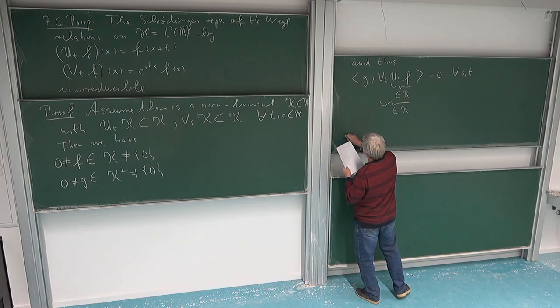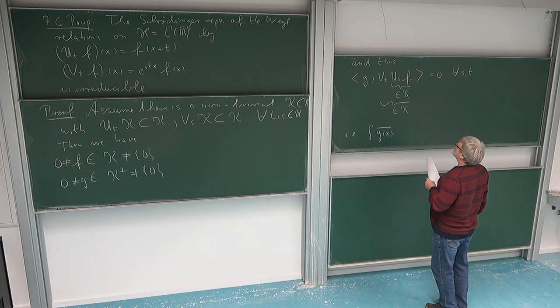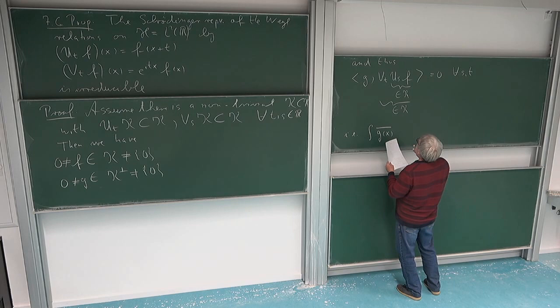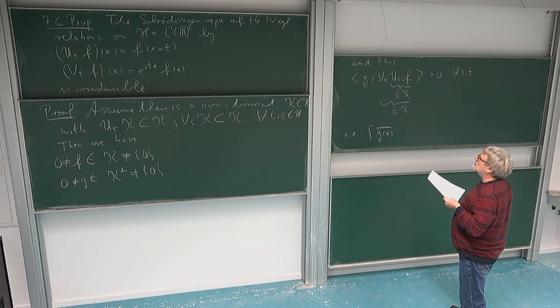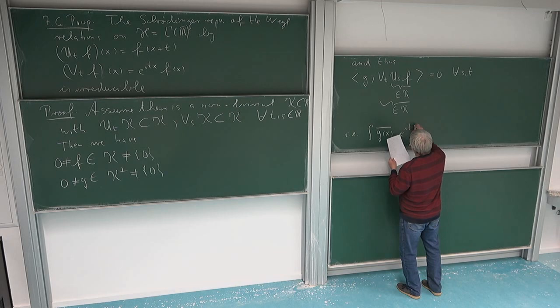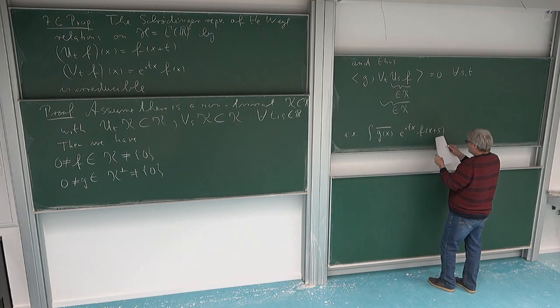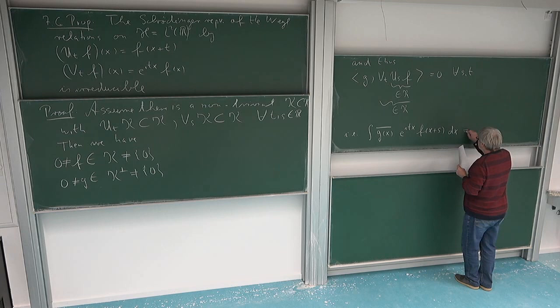Namely, writing out this inner product explicitly: it is the L² inner product of g-bar with V_t U_s f. We know the effect of U is a translation and V multiplies by the exponential factor, so this becomes the integral of g-bar(x) times e^(itx) times f(x+s) dx, and we know this equals zero for all s and t.